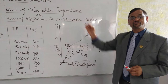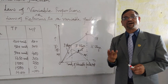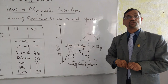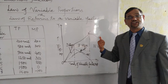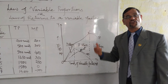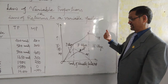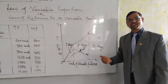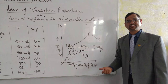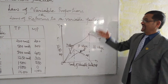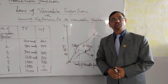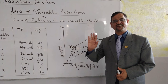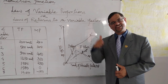This is the graphical representation of law of variable proportions. This portion carries 3 marks — graphically show the law of returns to a variable factor, or law of variable proportions. I will come with the rest of the topic tomorrow. Till then, bye bye, take care.